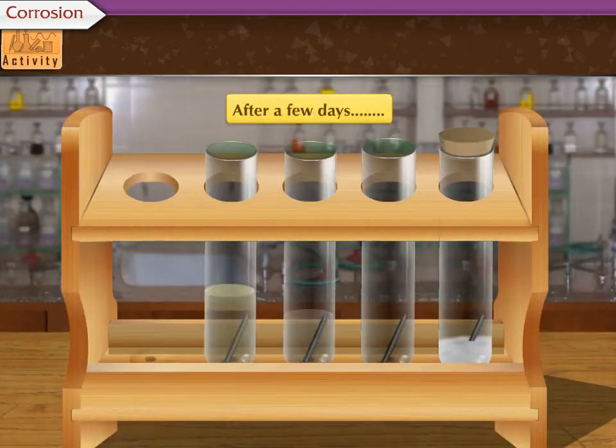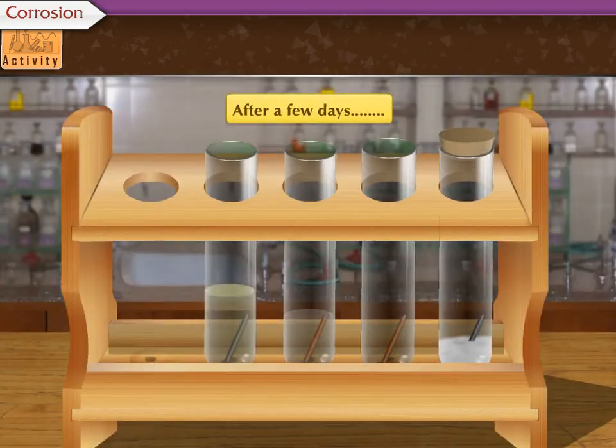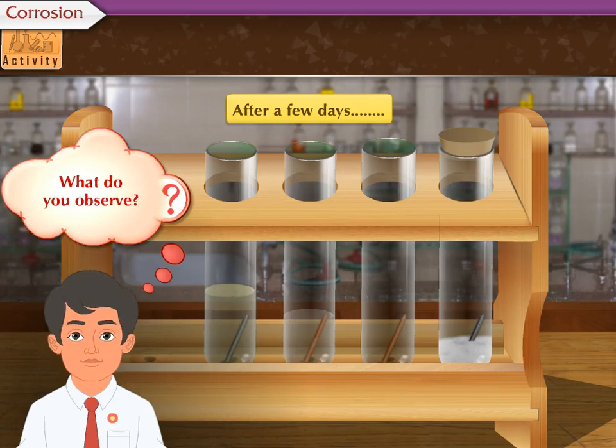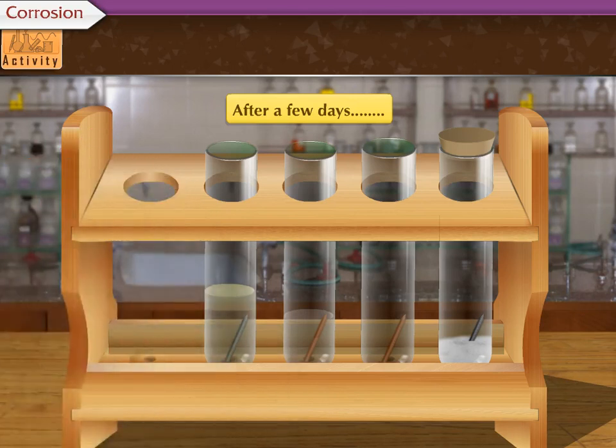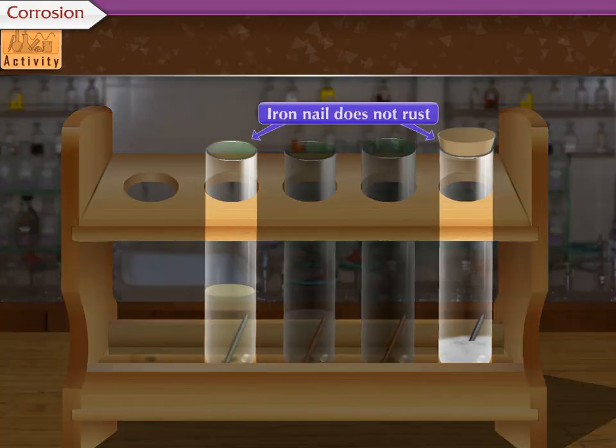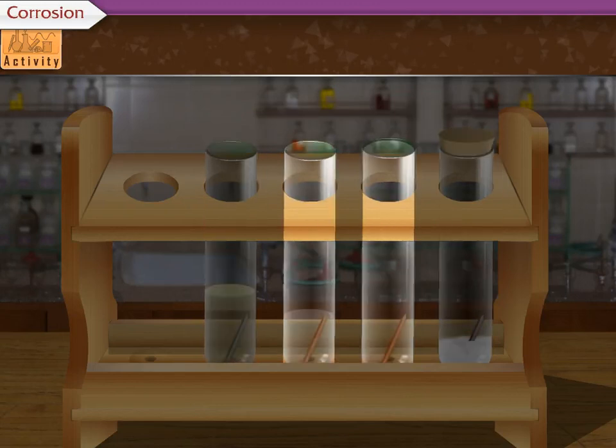After a few days, observe the four test tubes. What do you observe? The iron nail in the first and the fourth test tube remained as before, while the nail in the second and the third test tube was rusted.